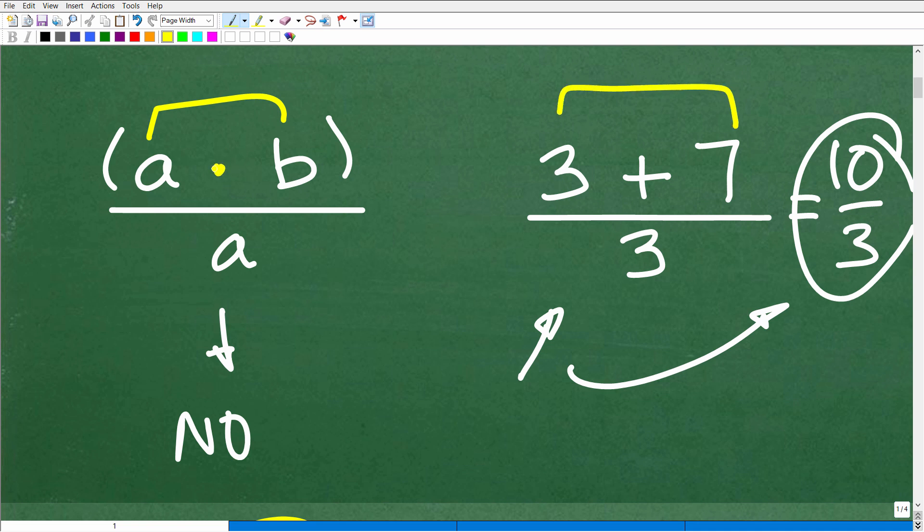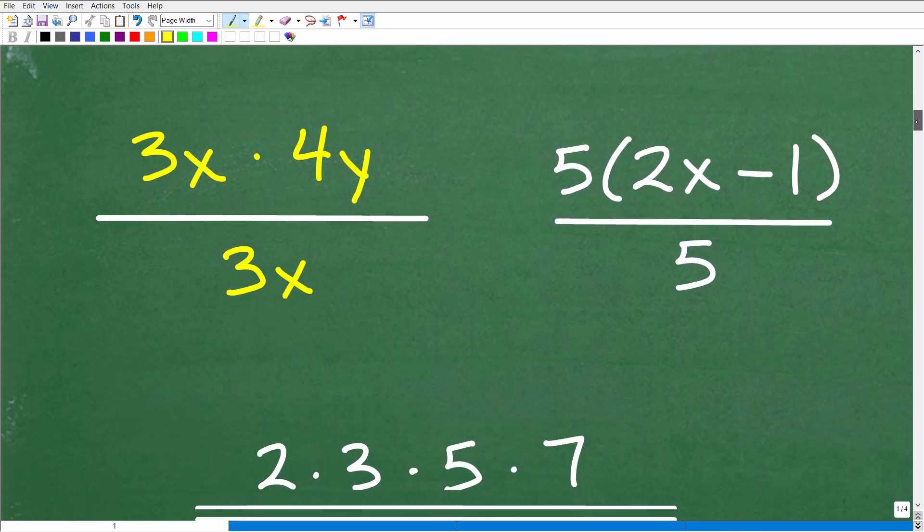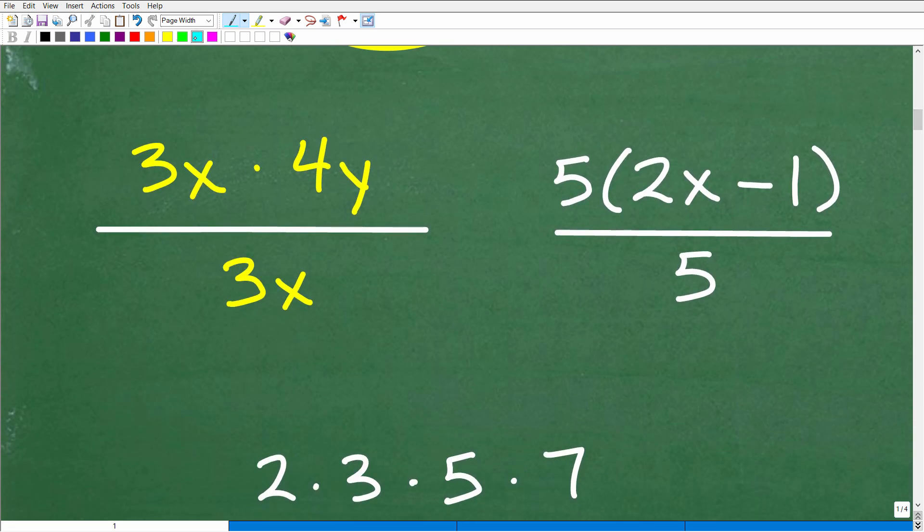But if I had a times b, that's a totally different ball game. I've got a times b over a - then I can cross cancel those a's and my answer would be b. Students just forget what a factor is. Now let's take a look at situations where we can absolutely cross cancel like factors.